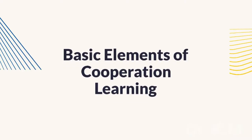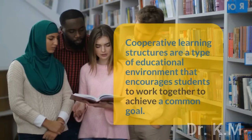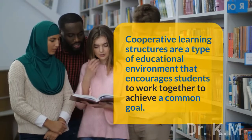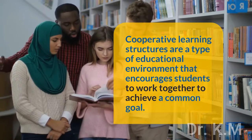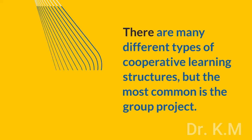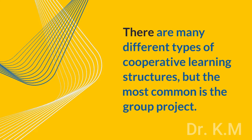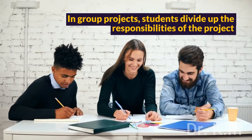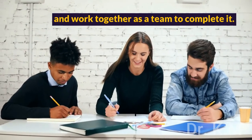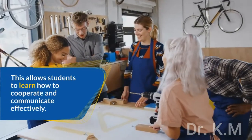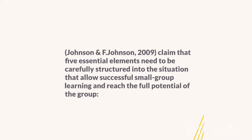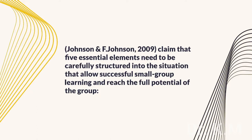Basic Elements of Cooperative Learning: Cooperative learning structures are a type of educational environment that encourages students to work together to achieve a common goal. There are many different types of cooperative learning structures, but the most common is the group project. In group projects, students divide up the responsibilities of the project and work together as a team, allowing students to learn how to cooperate and communicate effectively. Johnson and Johnson claim that five essential elements need to be carefully structured into the situation to allow successful small group learning and reach the full potential of the group.